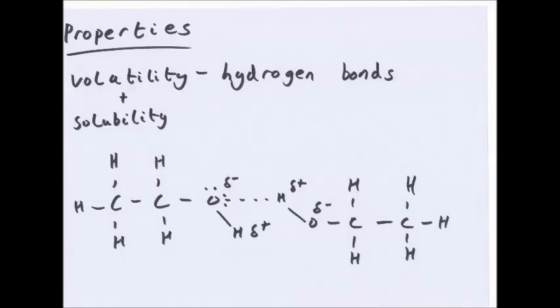Properties. Volatility, which is the ease at which a liquid can turn into a gas, and solubility. Alcohols are soluble, the OH groups form hydrogen bonds, so they can interact with water. And they are harder to turn from a liquid to a gas because of the hydrogen bond, the strongest form of intermolecular forces.